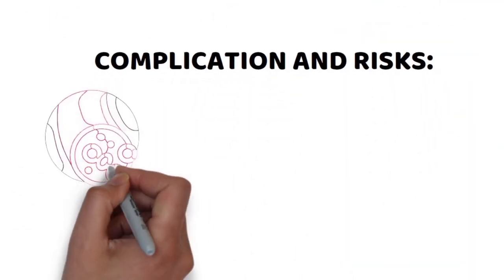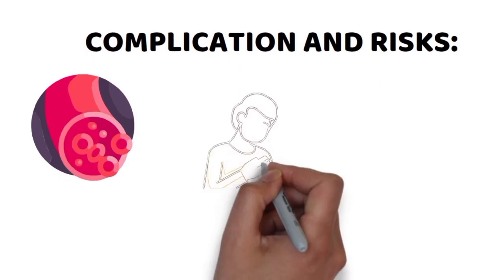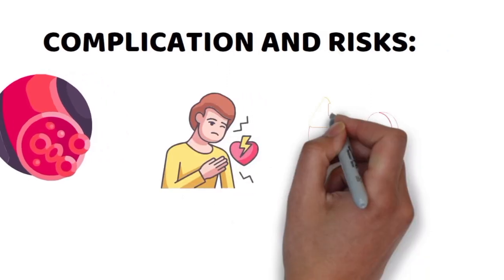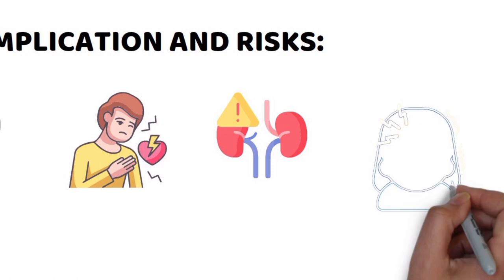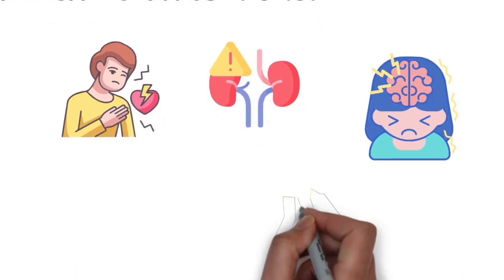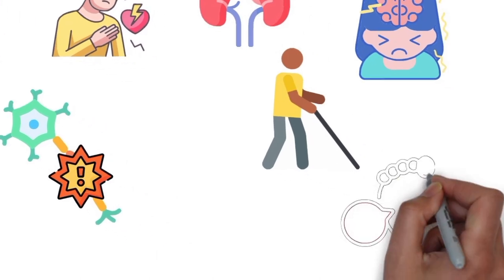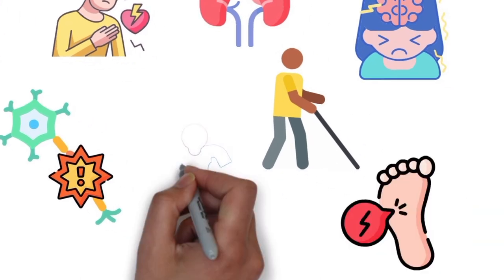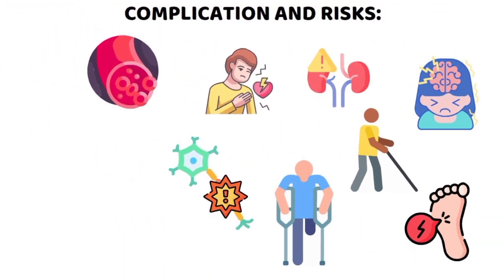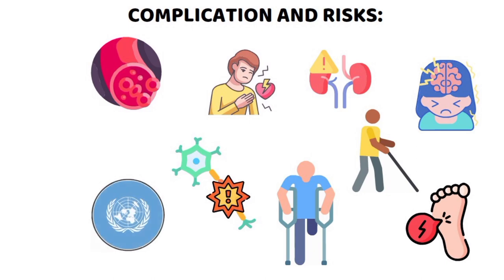Diabetes damages blood vessels, leading to heart disease, kidney failure, stroke, vision loss, nerve damage, foot problems, and amputation risk. The World Health Organization highlights the global impact of diabetes-related complications.